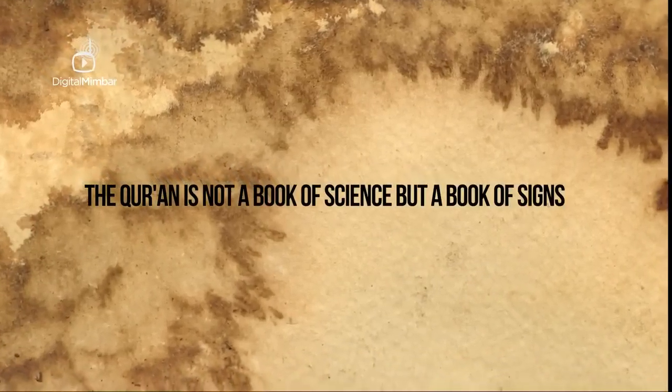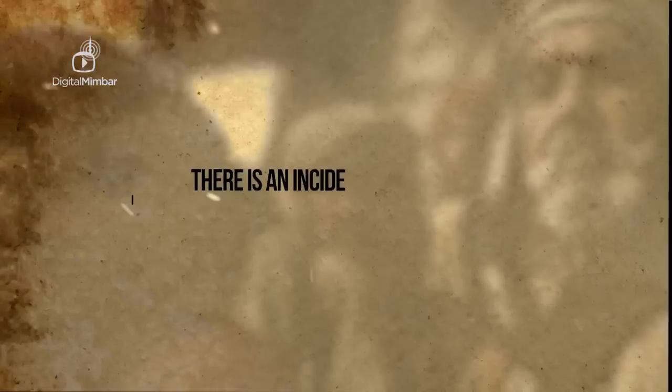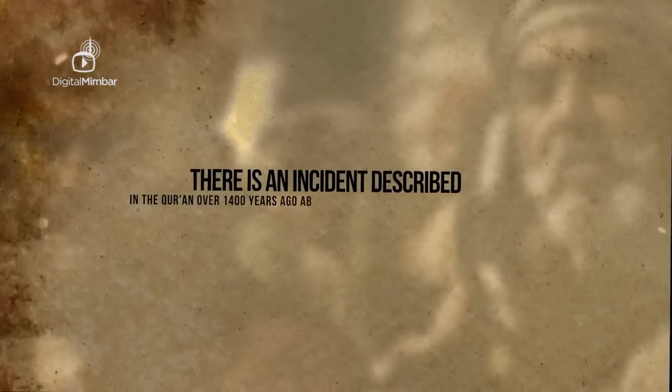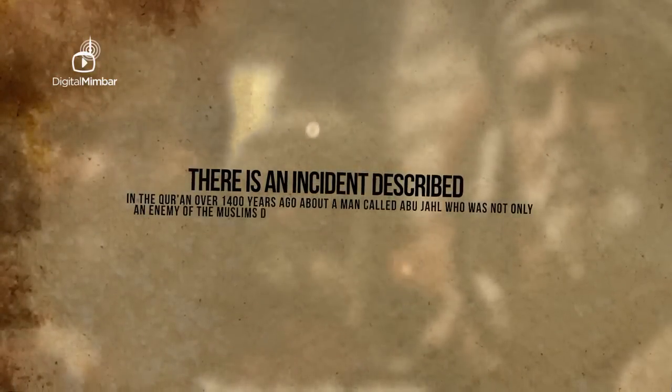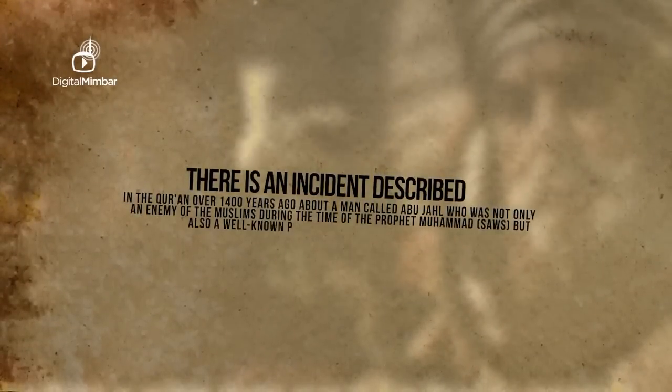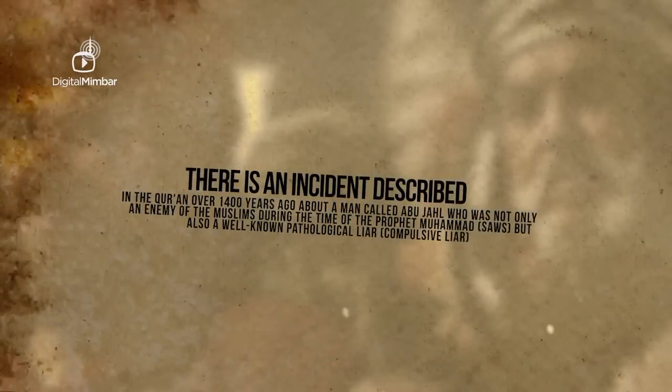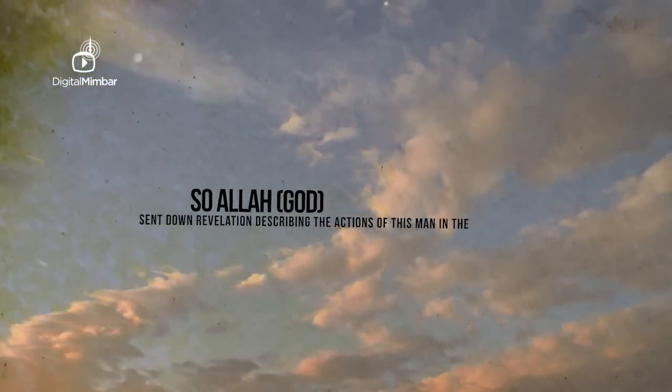The Quran is not a book of science but a book of signs, yet it contains undeniable facts related to science. There is an incident described in the Quran over 1400 years ago about a man called Abu Jahil, who was not only an enemy of the Muslims during the time of Prophet Muhammad (peace be upon him), but also a well-known pathological compulsive liar. So Allah, God, sent down the revelation describing the actions of this man.